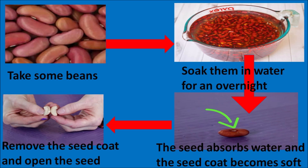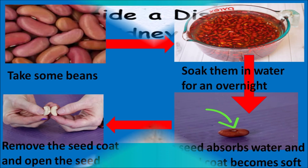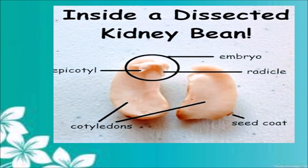To make this covering soft, we will soak the beans in water overnight. We will find that the seeds have become softer and bigger in size because they have absorbed water. Now it's easy to remove the outer cover and open the seed. The outer cover that we have just removed is the seed coat. Inside, we can see a fleshy white part called the cotyledon, and there is a curved part at one of the tips which is called the embryo.